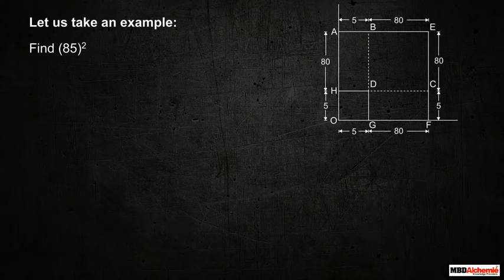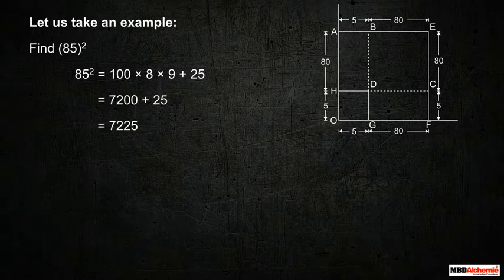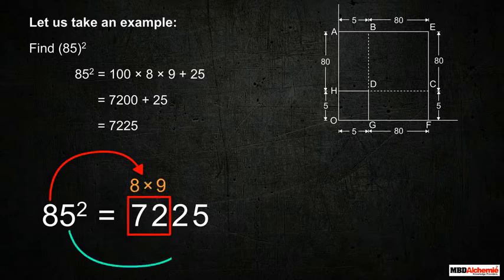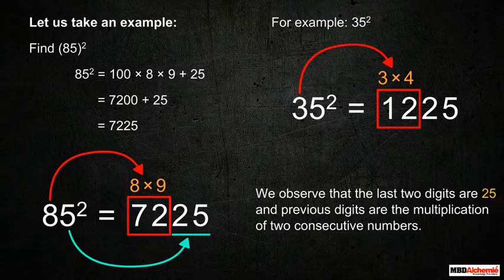Let us take an example to find the square of 85. By applying the above trick, we write the square of 85 as 100 × 8 × 9 + 25, since x is 8. This gives 7225. We observe that the last two digits are 25 and the previous digits are the multiplication of two consecutive numbers, 8 and 9.